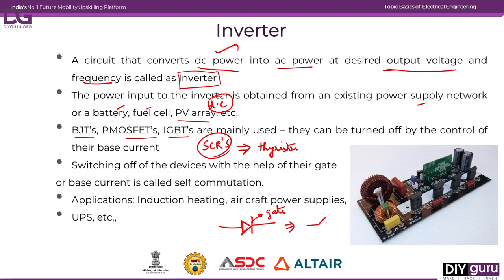This thyristor can be used as a switch by controlling the gate input. The gate or pulse input — there are different circuits that can generate this gate pulse. For simplicity, let me draw a waveform where you will have some voltage above zero.